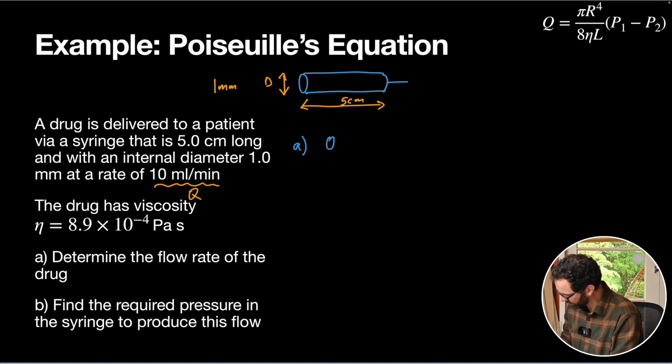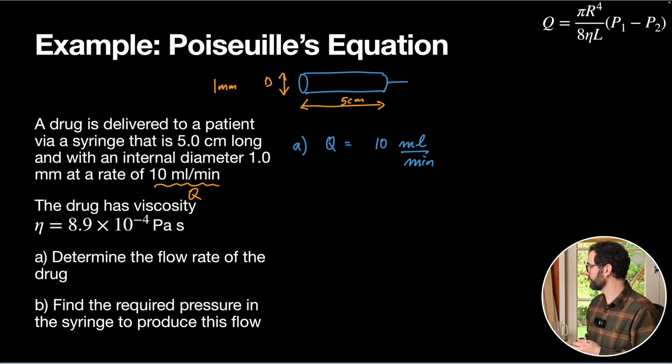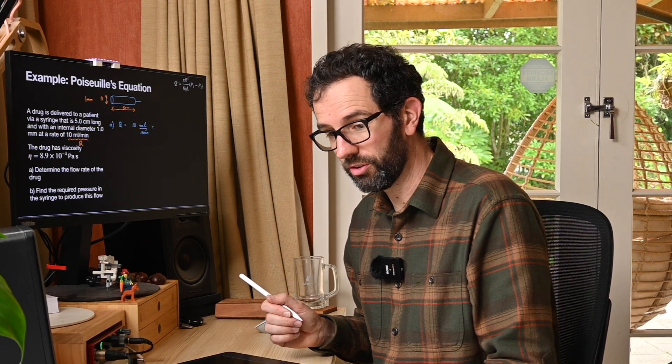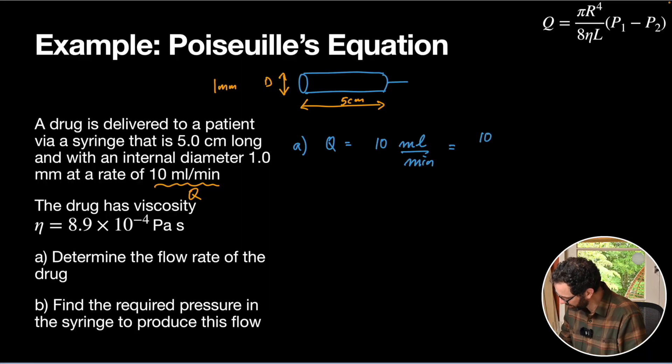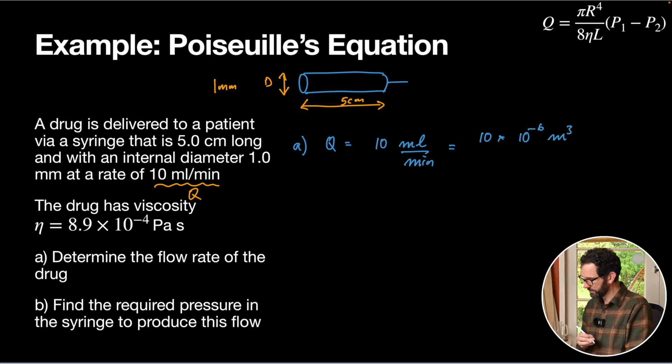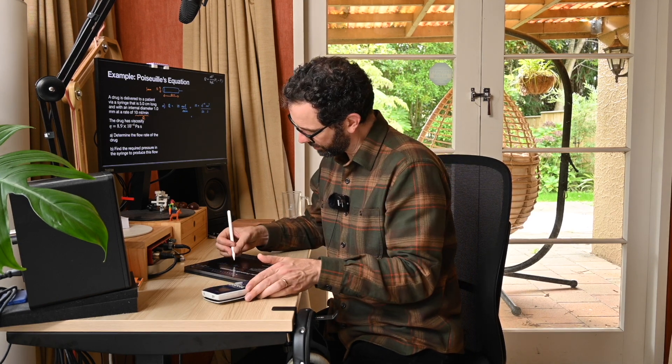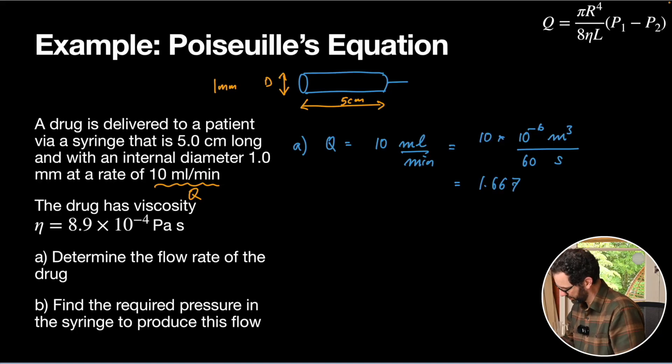For part A, we know that Q is equal to 10 milliliters per minute. So this is an example for us to practice our unit conversions. One milliliter is one thousandth of a liter, which in turn is one thousandth of a cubic meter. So that's going to be 10, and one milliliter is going to be 10 to the negative six cubic meters. And we also know that one minute is 60 seconds. So our flow rate will therefore be 10 times 10 to the negative six divided by 60, which is 1.667 times 10 to the negative seven cubic meters per second.